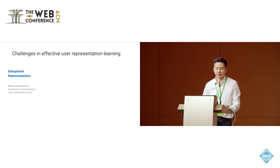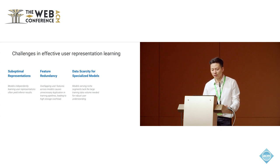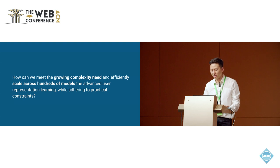Such limitations have also led to several interrelated challenges in effective user representation learning. First, independently learned user representations often yield inferior results. Second, overlapping user features across models cause unnecessary duplication in training pipelines, leading to high storage overhead. Third, models serving niche segments lack the large training data volumes needed for robust user understanding. Last but not least, customizing architecture and feature selection for the specific needs of each model is not a scalable process. With all this, we would like to ask: how can we meet growing complexity needs and efficiently scale advanced user representation learning across hundreds of models while adhering to practical constraints?